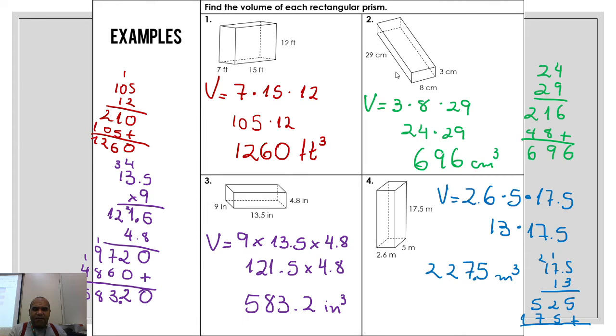3 times 8 times 29. Doesn't matter the order, okay guys? As you know, the order of the factors don't change the product. 3 times 8 is 24, and after, 24 times 29. We solve over here: 696.